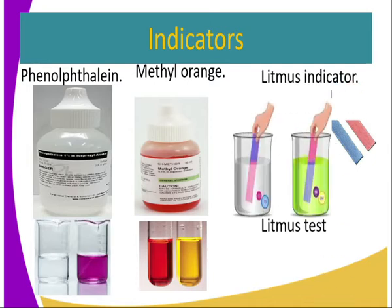Litmus indicator. We may use litmus paper, which has two definite colors — it is either red or blue. A blue litmus paper will turn red in an acidic substance.